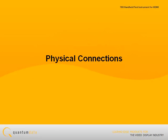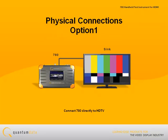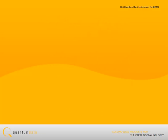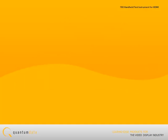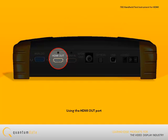The first step in running video pattern tests on an HDMI HDTV is to make the physical connections. You can either test by directly connecting to an HDTV, or you can test an HDTV through an AV receiver. In either case, you use the 780 HDMI out port.